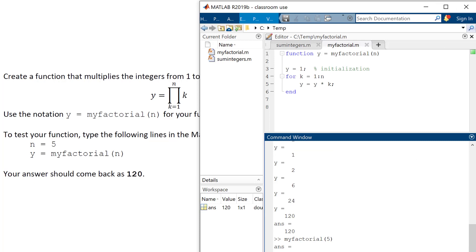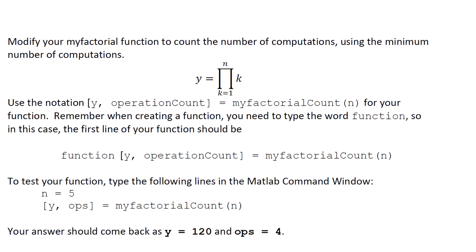Now we get into the bulk of this: how many steps does it take the computer to complete an action? We're going to fix our factorial function to count the number of operations. In MATLAB you can have two outputs, which is kind of fun. We'll have y and op_count (operation count), and we'll call the function my_factorial_count. Every time we do an operation, we count it.